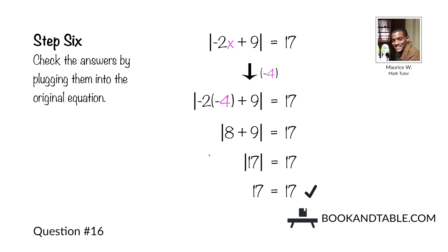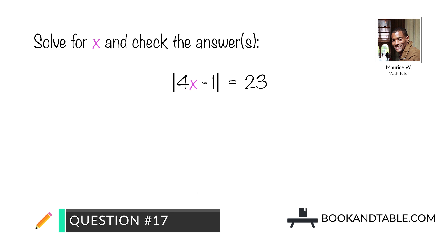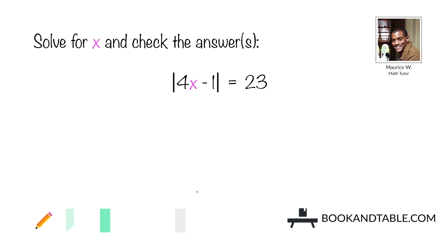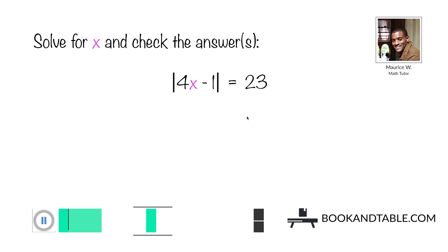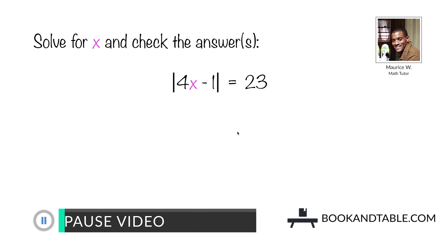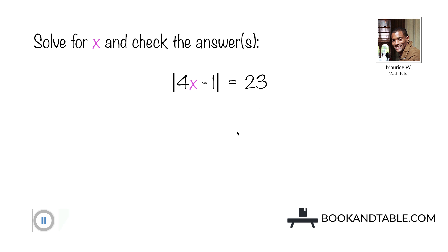And now for our last practice question for this set, question number seventeen: solve for x and check the answers. The absolute value of 4x minus 1 is equal to 23. Pause the video to solve this question, then press play when you are ready.